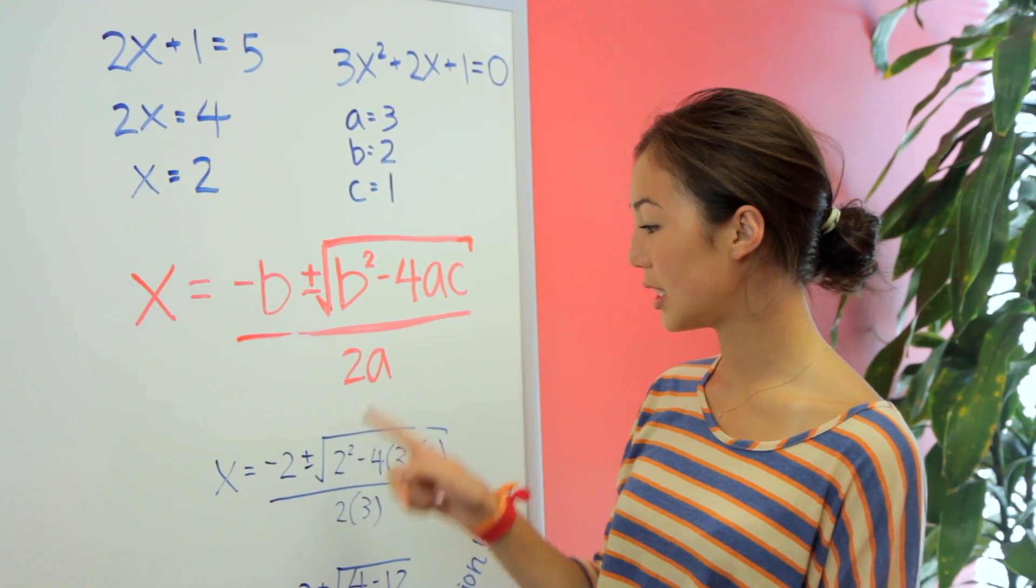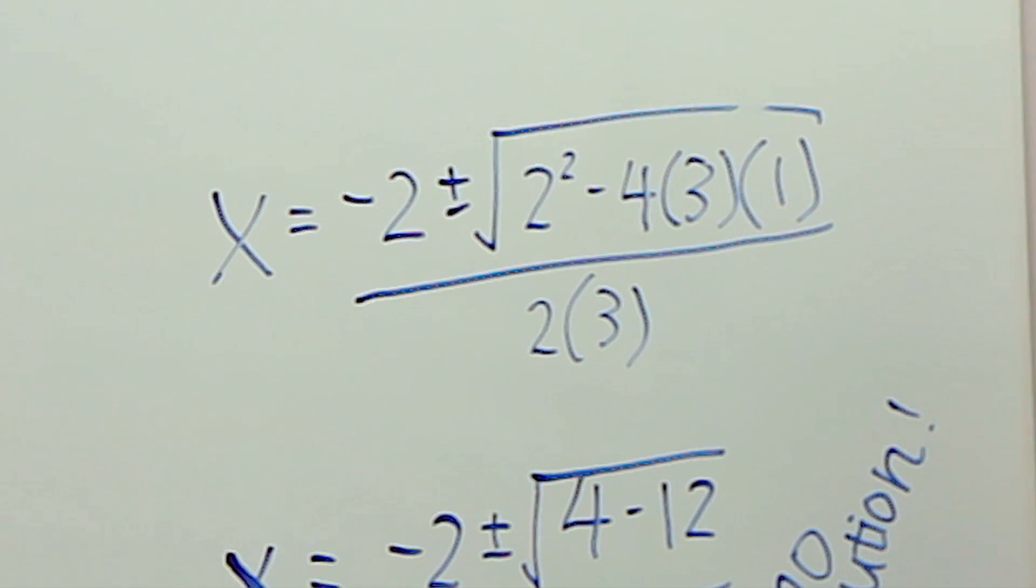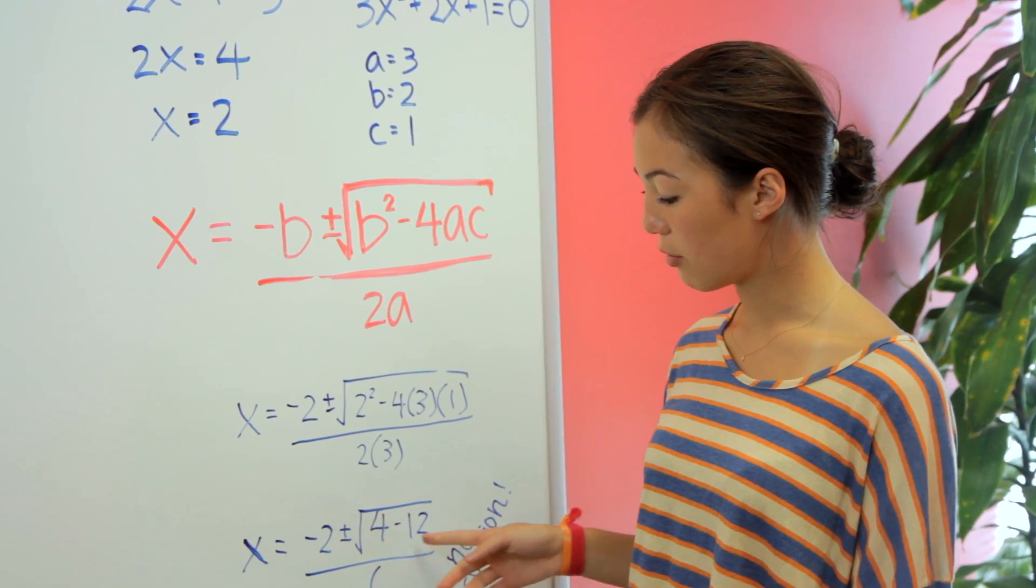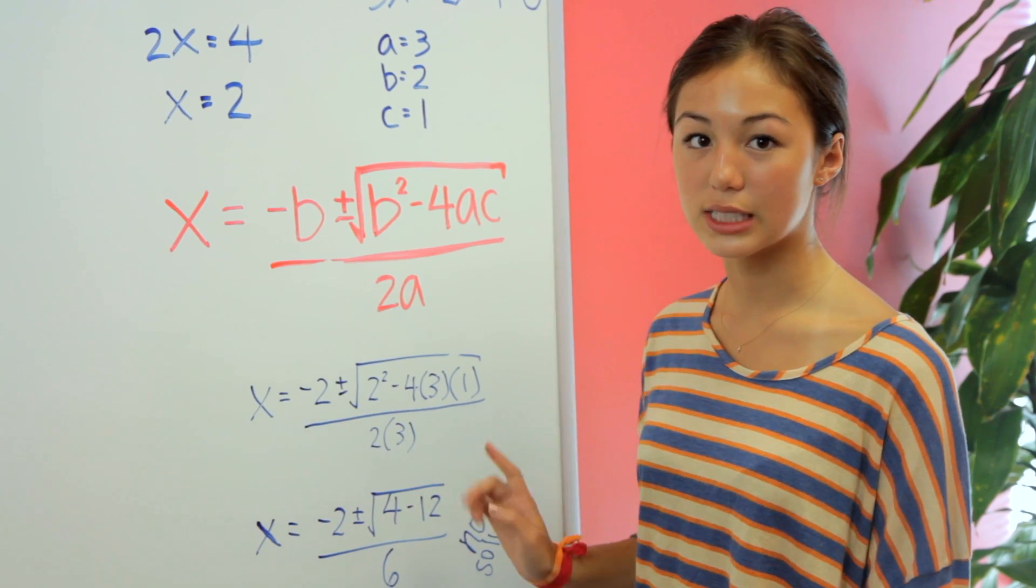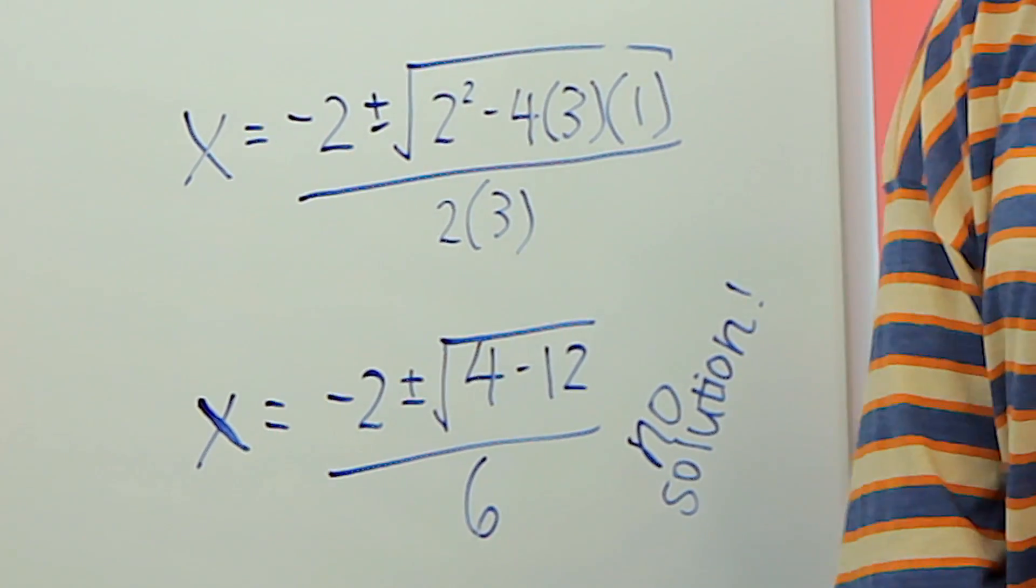When we plug these all in, we get this equation, which I've already written up here. When we simplify it, we actually get 4 minus 12 in the square root, which is a negative number, and we can't take the square root of a negative number. So in this case, there's actually no solution.